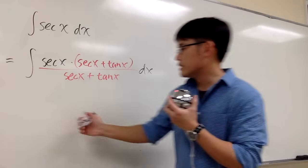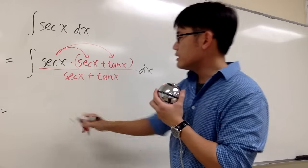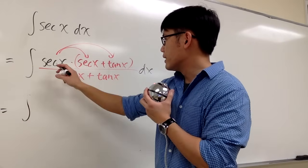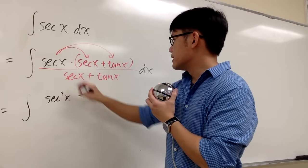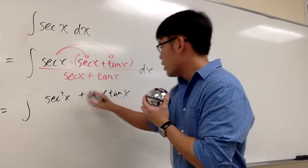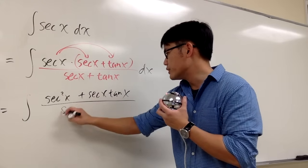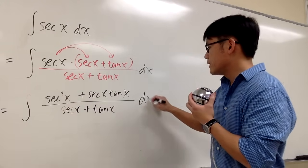This way it's actually easier because if you distribute the sec x into these parentheses, we are going to see we will have the integral of sec squared x plus sec x tangent x over the denominator, which is sec x plus tangent x dx.